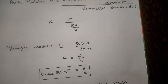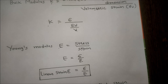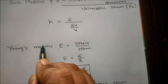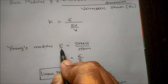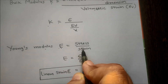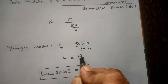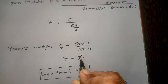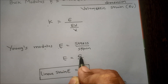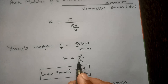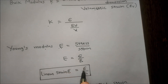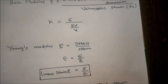Next is Young's Modulus. Young's Modulus is defined as the ratio of direct stress to direct strain. The symbol for Modulus of Elasticity or Young's Modulus is capital E. So E equals stress by strain. We can write linear strain as sigma divided by E. So linear strain is the ratio of stress to modulus of elasticity.